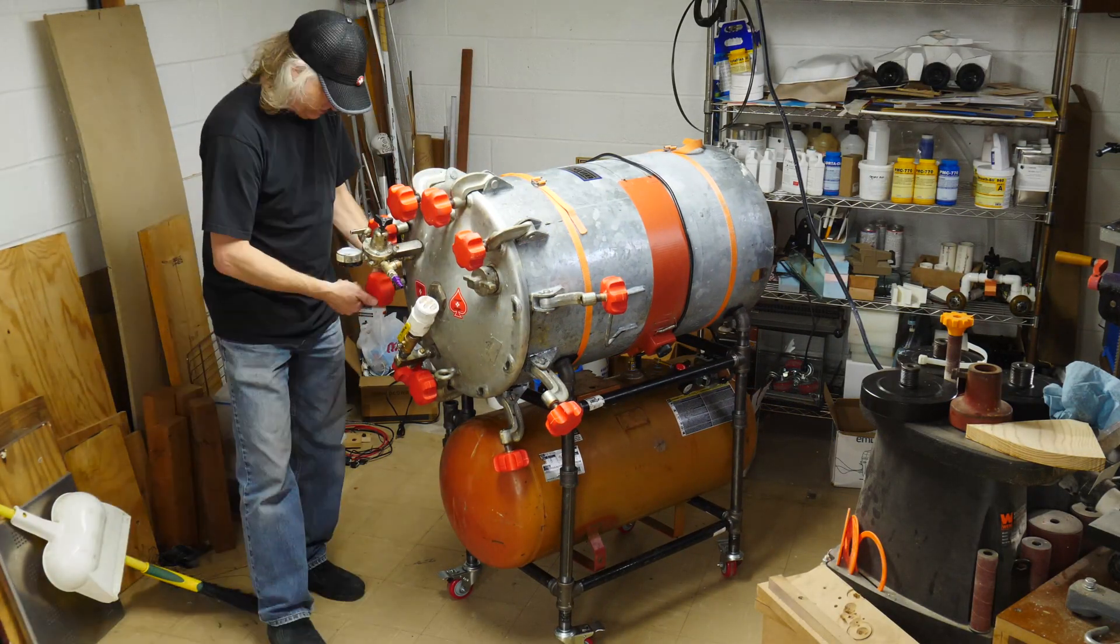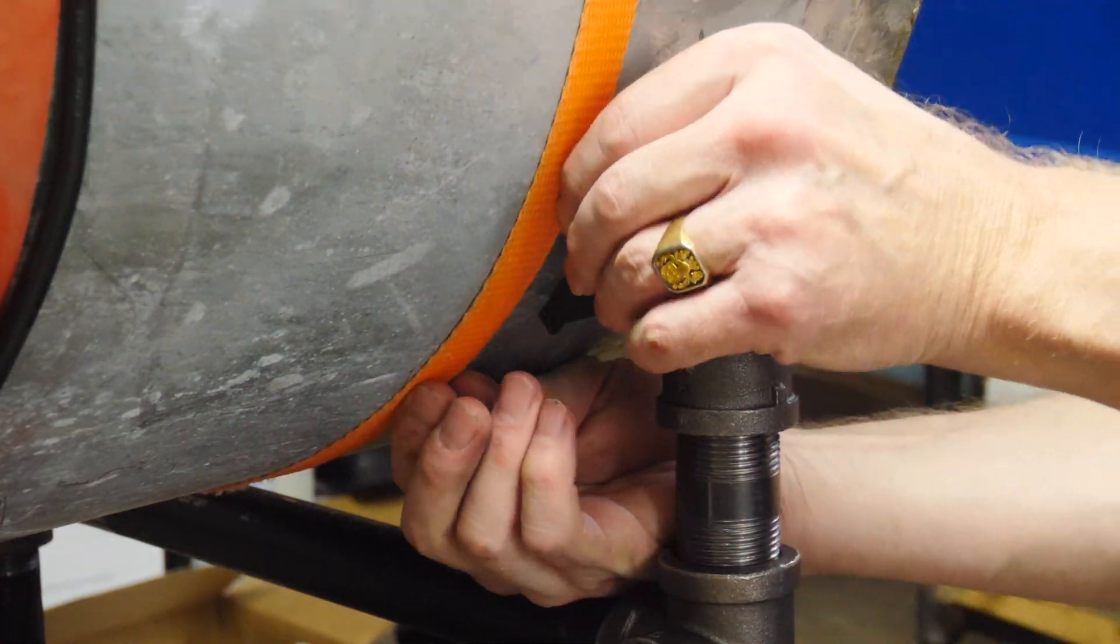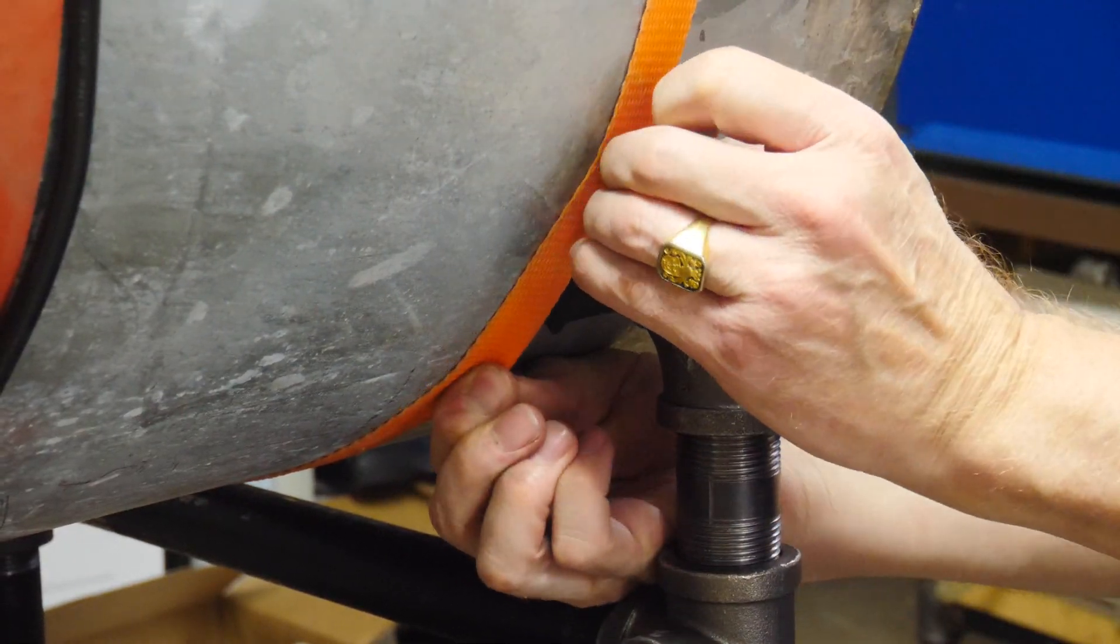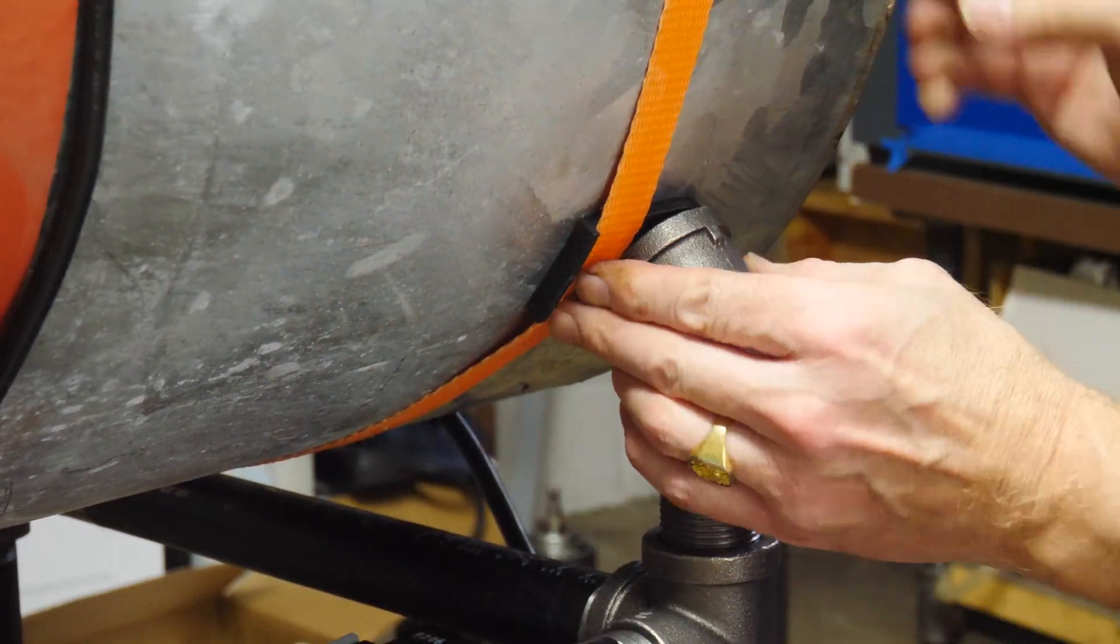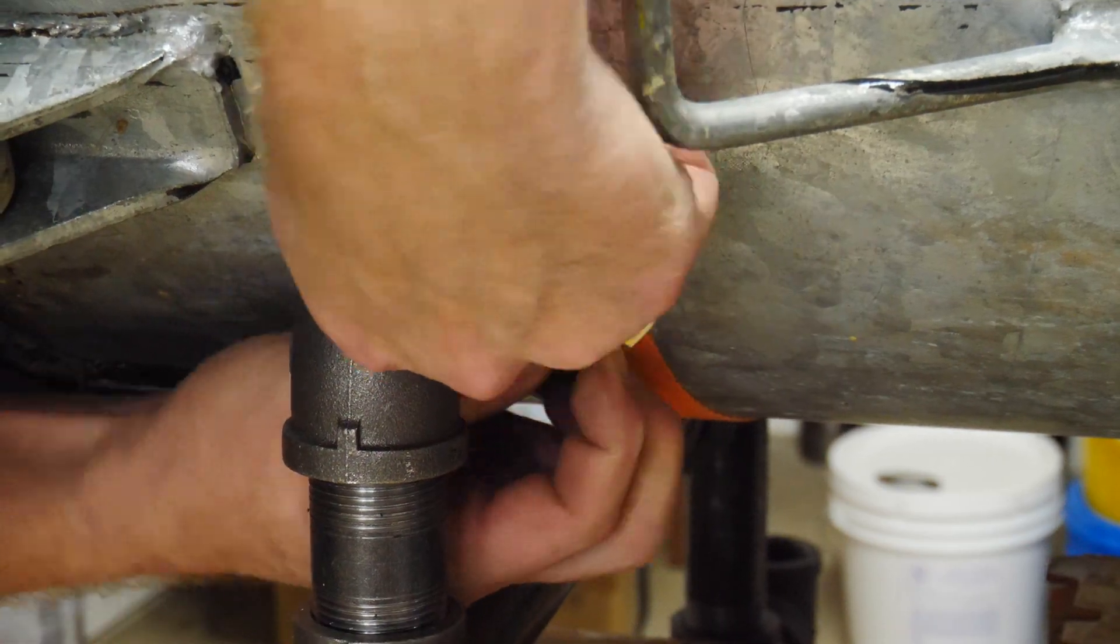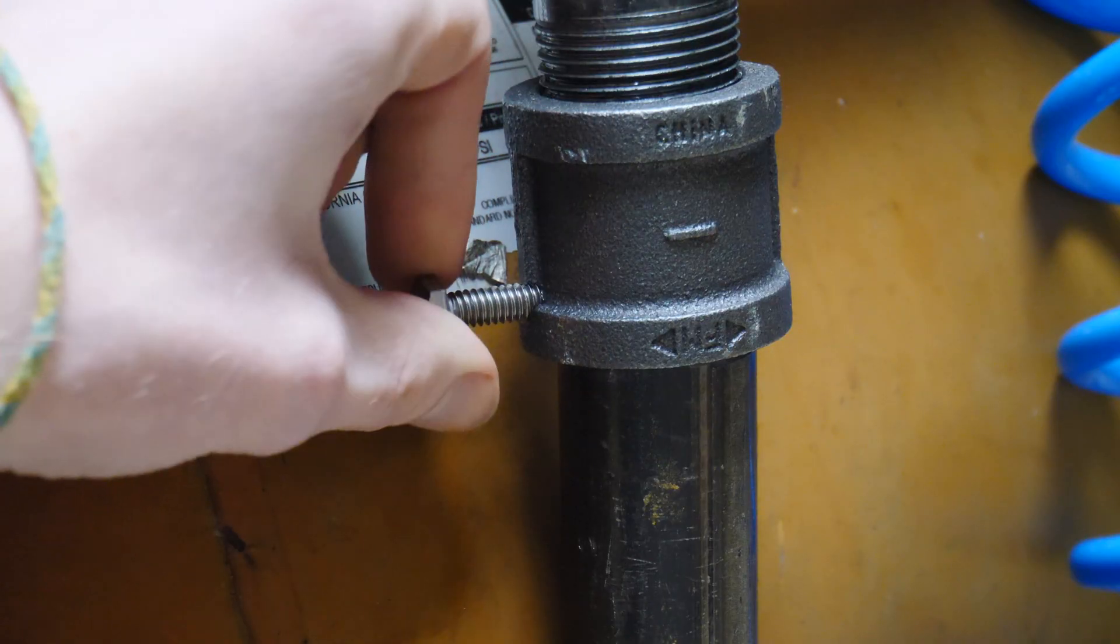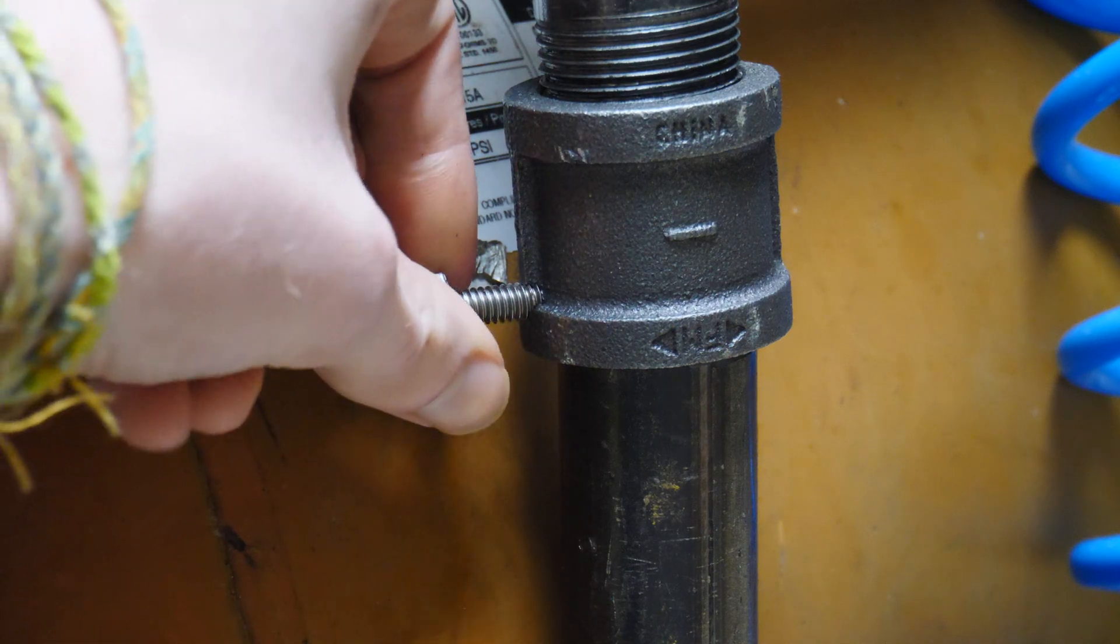We got some little 45 degree elbows at the top there and I printed out some 3D printed carbon fiber feet adapters that slide into those elbows, then we have this strap that goes around the tank and attaches everything. The tank is super heavy, it's not coming off the top.